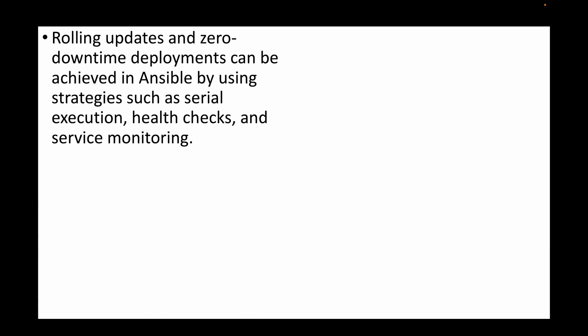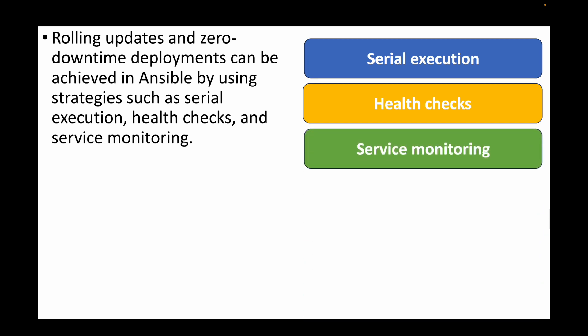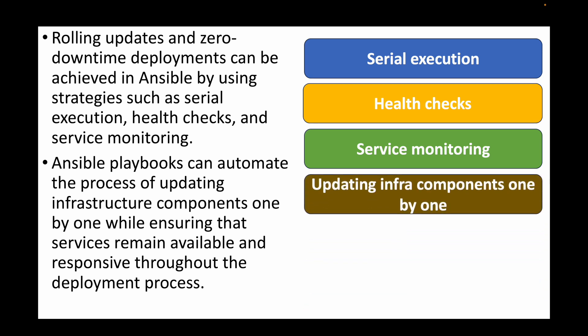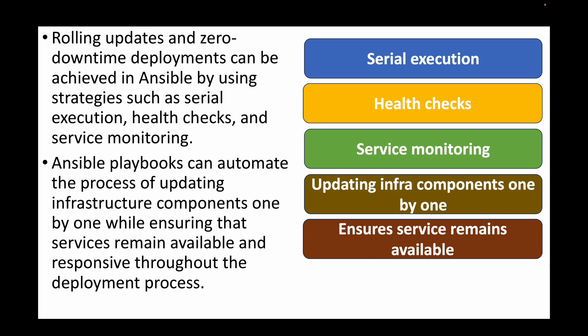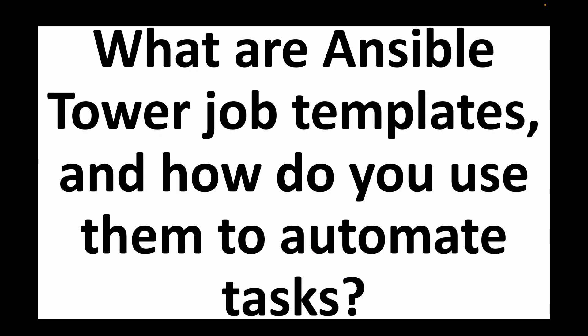The next question is: how do you handle rolling updates and zero-downtime deployments in Ansible? Rolling updates and zero-downtime deployments can be achieved through strategies such as serial execution, health checks, and service monitoring. Ansible playbooks can automate the process of updating infrastructure components one by one — for example, updating instances one at a time — while ensuring services remain available and responsive throughout the deployment process.